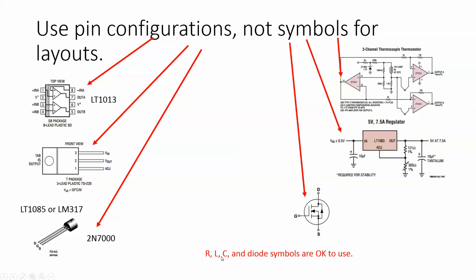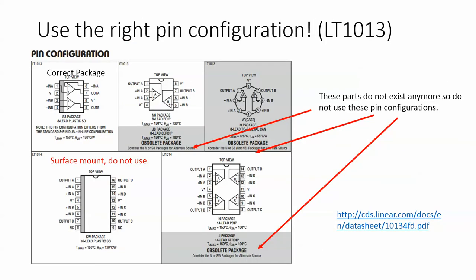Resistor, inductor, capacitor, and diode symbols are okay to use because they are two-port devices anyway, so you can just do those by hand normally. When you read the data sheet, you might be given a few choices of which pin configurations to use.